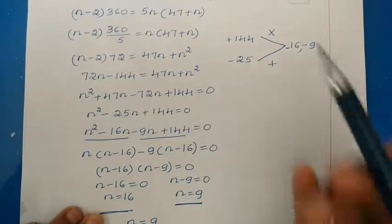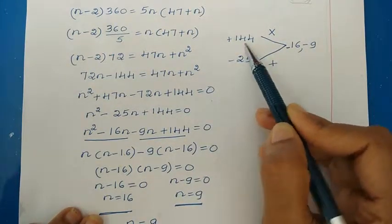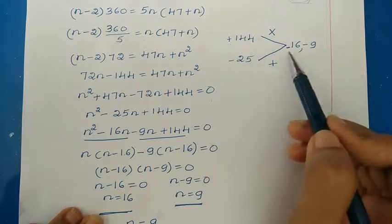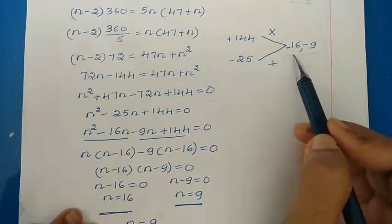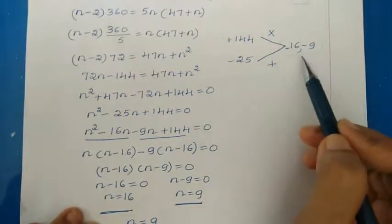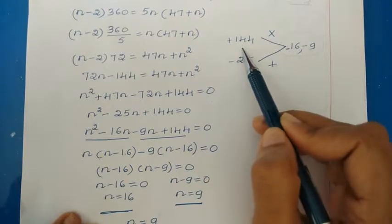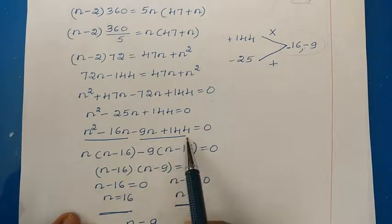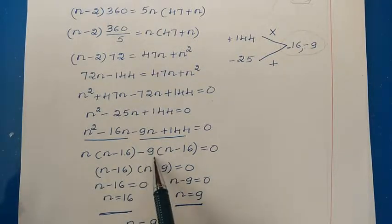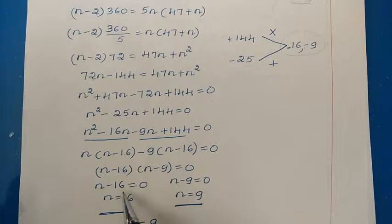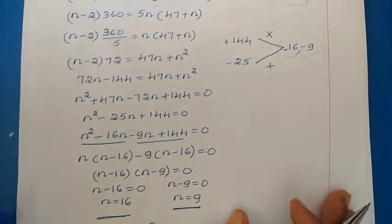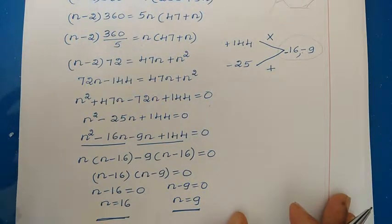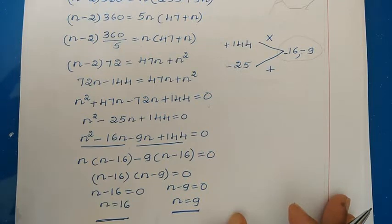Those numbers are −16 and −9. Factoring: N² − 16N − 9N + 144 = 0, so N(N−16) − 9(N−16) = 0, giving (N−16)(N−9) = 0. Thus N = 16 or N = 9. So the number of sides of the polygon is 9. If you like this video please like, subscribe, and click the bell icon for notifications.